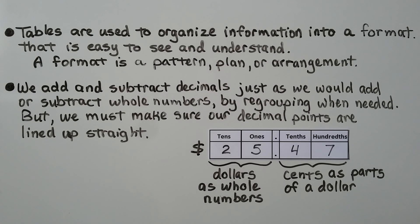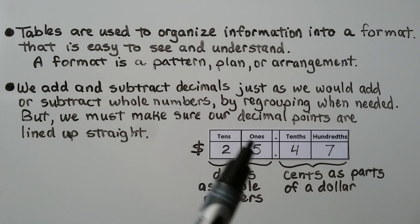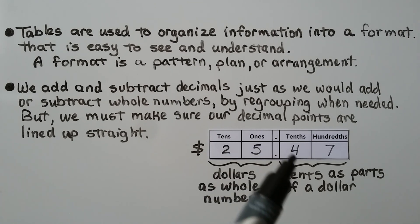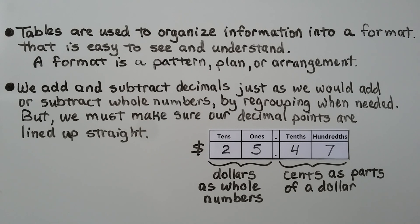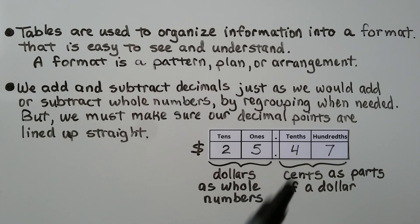Tables are used to organize information into a format that is easy to see and understand. A format is a pattern, plan, or arrangement. We add and subtract decimals just as we would add or subtract whole numbers by regrouping when needed, but we must make sure our decimal points are lined up straight. For money amounts, the dollars are the whole numbers, the tenths represent dimes ($0.10 of a dollar), and the hundredths represent pennies. So four dimes, or 40 cents, would be four tenths of a dollar.